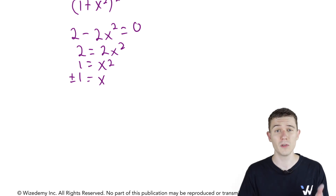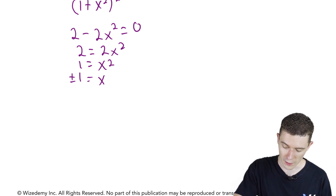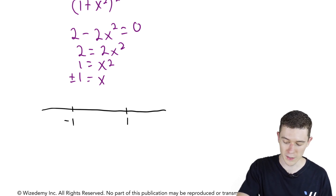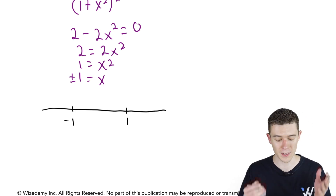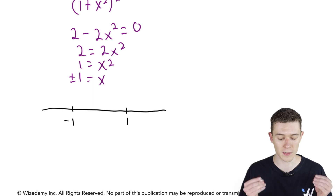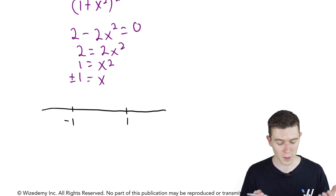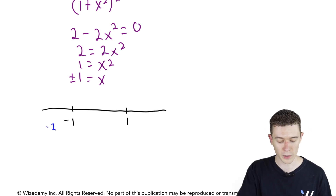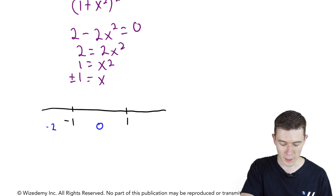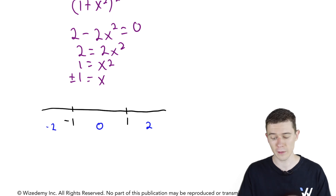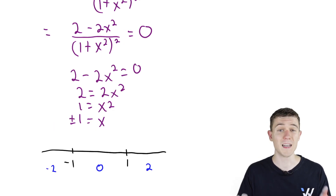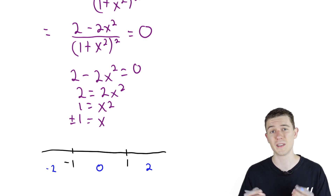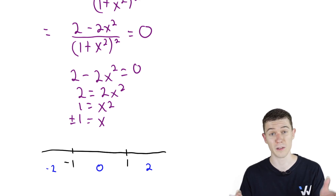The process is very similar to the first derivative test. We'll take these values — negative 1 and 1 — and place them on a real number line. This splits things into three different intervals, and we'll pick test values to check whether our second derivative is positive or negative on each interval: negative 2 to the left of negative 1, 0 in between, and 2 to the right of 1. If the second derivative is positive, the function is concave up; if negative, the function is concave down.